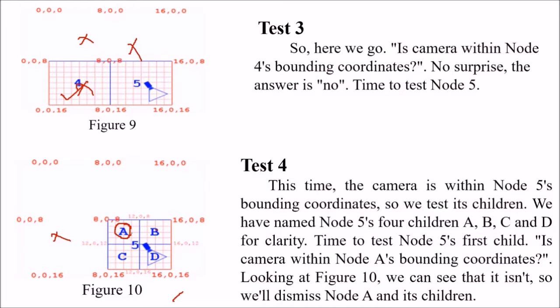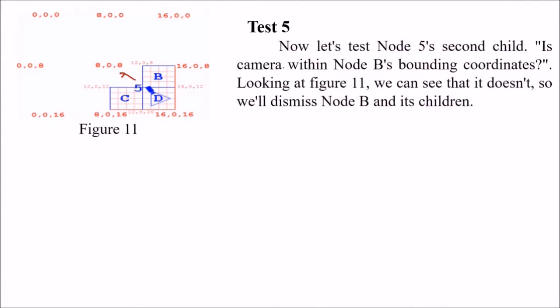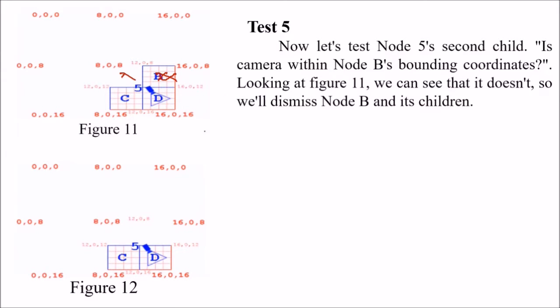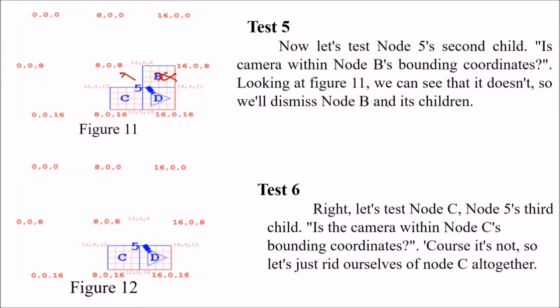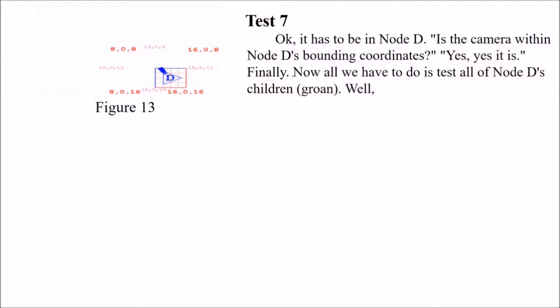Is the camera within node A's bounding coordinates? Looking at the figure, it is not — so we dismiss node A and its children. Is the camera within node B? It doesn't — so we dismiss B also. Test 6: is the camera within node C's bounding coordinates? Of course it is not — so we get rid of C as well. Final test: is the camera within node D's bounding coordinates? The answer is unanimously yes.